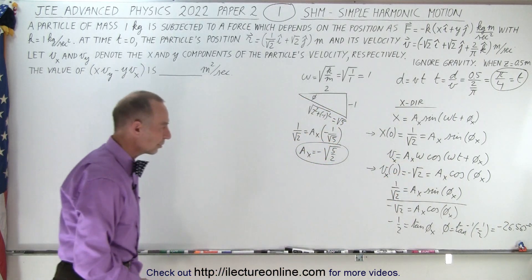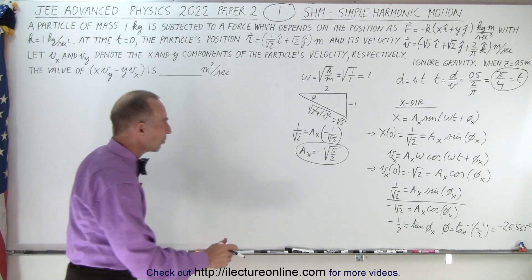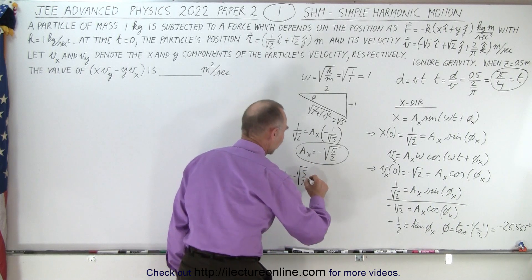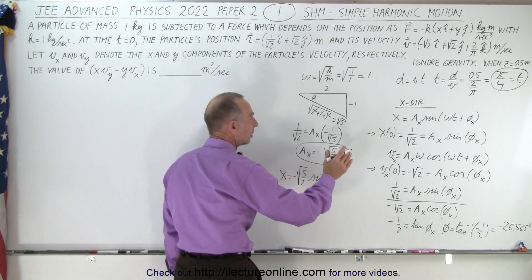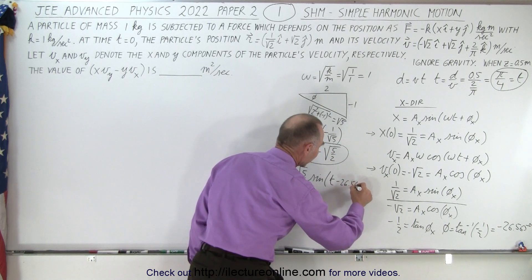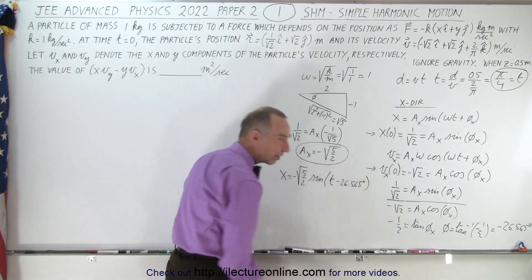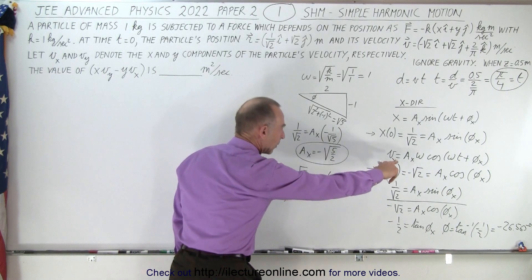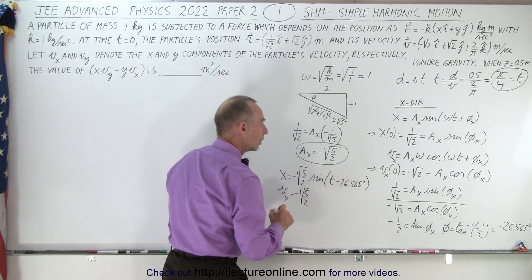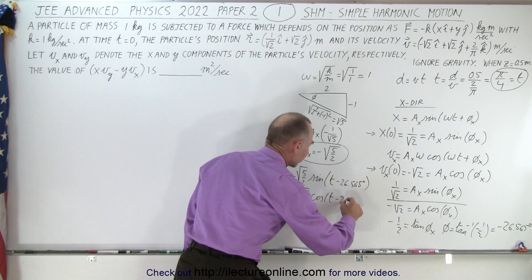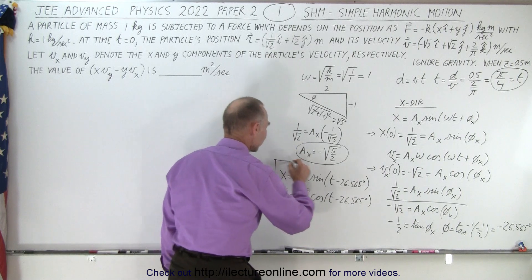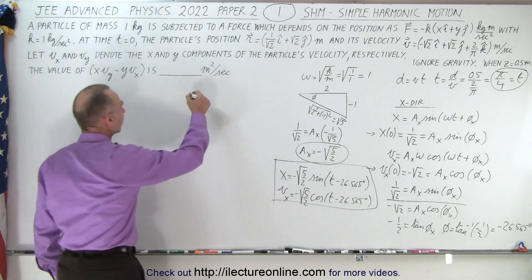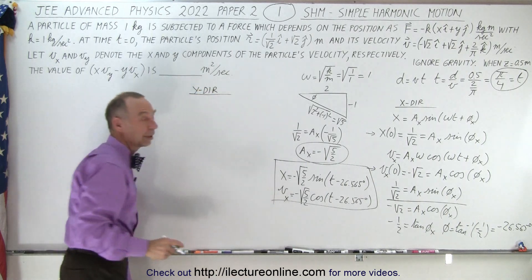Now we have a-sub-x and the phase angle, so we have the two x-direction equations. x equals negative square root of 5 over 2 times the sine of t plus the phase angle of minus 26.565 degrees. And v-sub-x equals negative square root of 5 over 2 times the cosine of t minus 26.565 degrees. There we have the first two equations we're going to need to solve for the final expression.